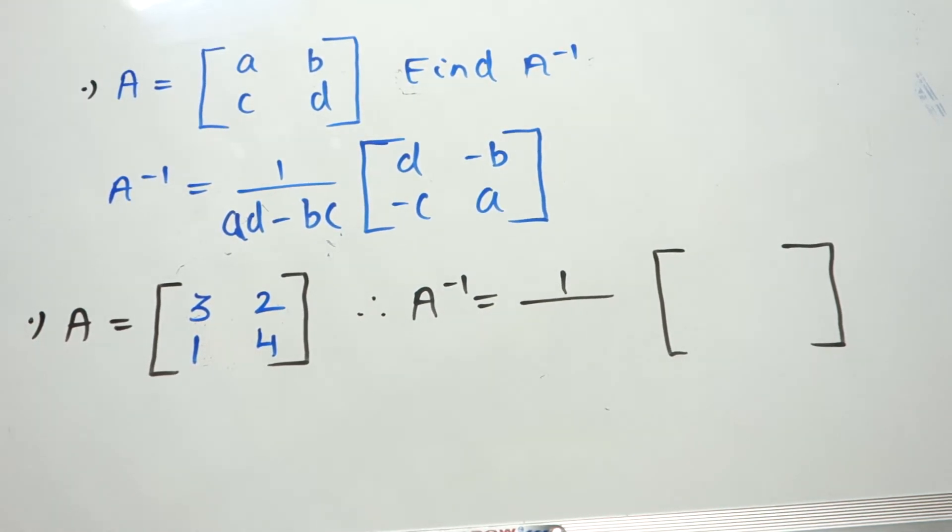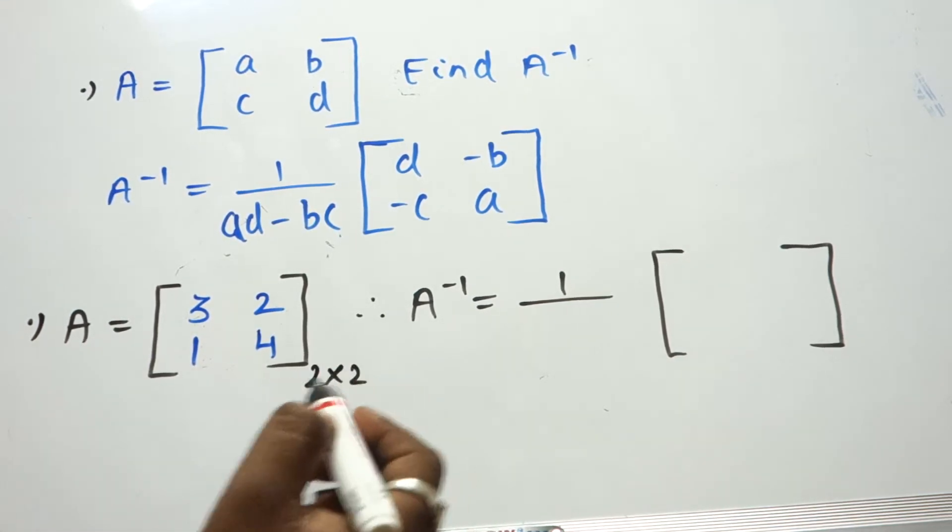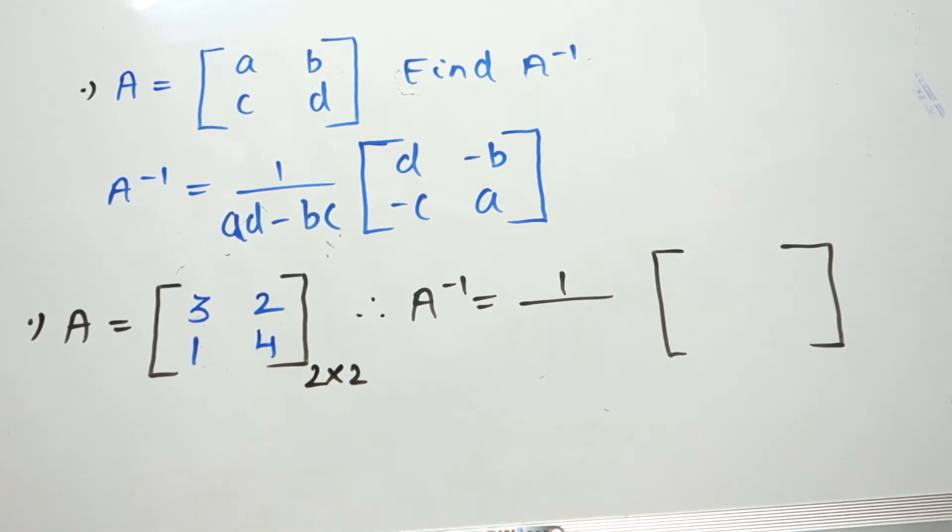Good morning everyone, I am back with some tricks. In this video we will see how to find the inverse of A for a 2x2 matrix in just fractions of a second. The matrix has order 2x2, meaning 2 rows and 2 columns.